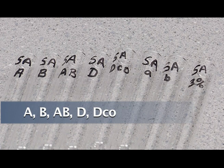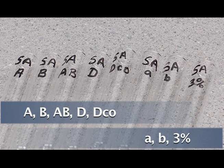And then one for the AB, D, the D control. And then we're going to put the initials in lowercase for the reverse typing. So lowercase A, lowercase B. And we're going to label a tube for the 3% suspension.